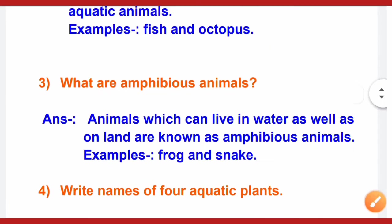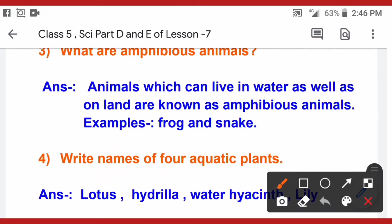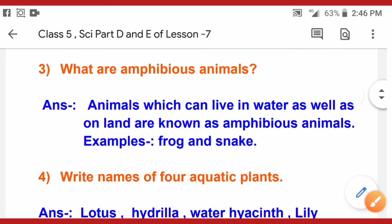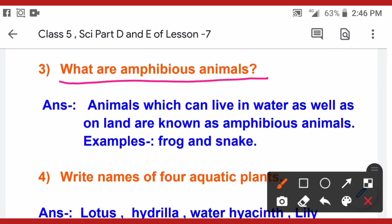Question number 3: what are amphibians? Amphibians are those animals that can live in water as well as on land. Examples are frog and snake.